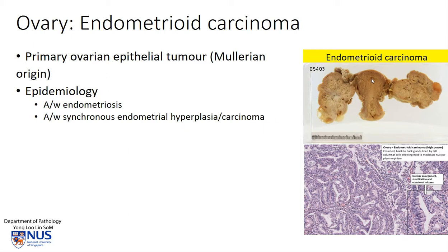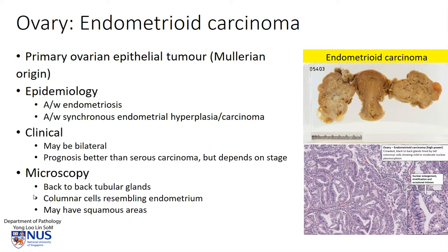So again, it is important to examine the endometrium as well. Clinically these tumors may sometimes be bilateral. The prognosis is generally better than that of serous carcinoma, but it depends very much on the stage. Microscopically, often we see these crowded back-to-back glands with hardly any stroma in between. The cells are quite columnar and they closely resemble endometrium, and there may also be some squamous-looking areas.